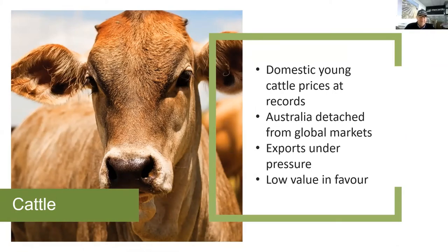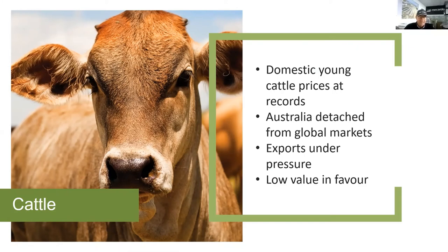Low value cuts are going well at the moment. We produce a lot of low value cuts — a lot of hamburger meat — but we also rely on high value markets for our premium price. Japan takes a lot of premium cuts, as does Korea and now China as well. But there is a swing worldwide toward lower value cuts — grilling steaks, hamburgers, sausages, that sort of thing.